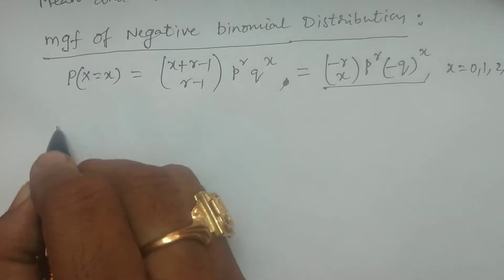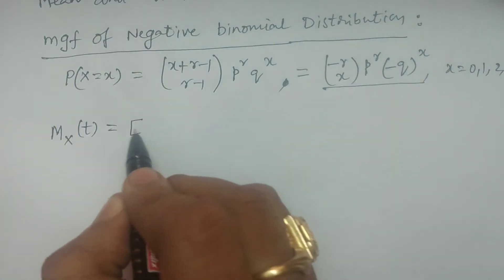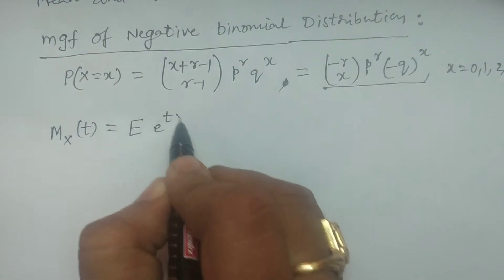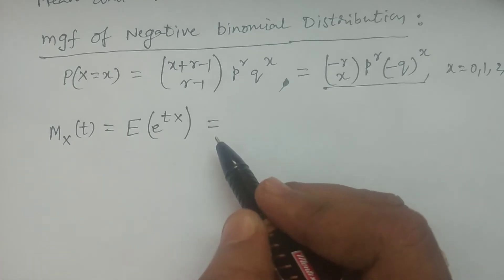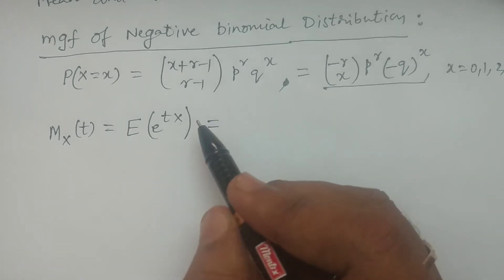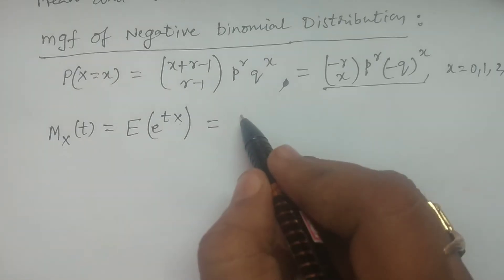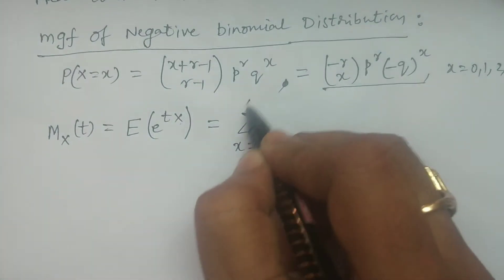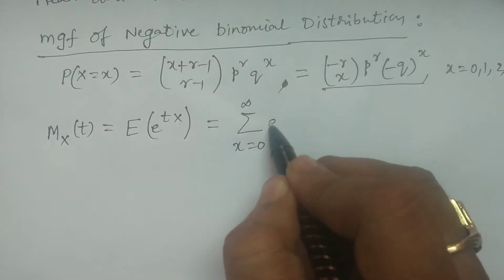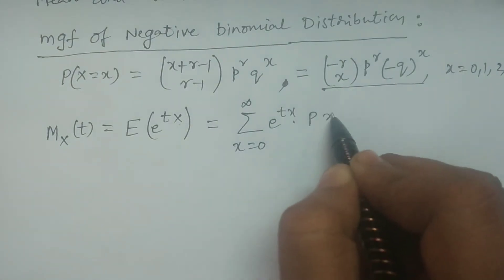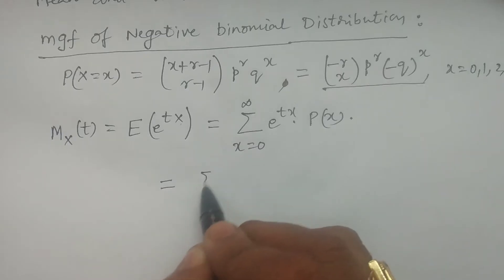Now, the moment generating function M_X(t) of the negative binomial distribution is defined as the expectation of e to the power tx. This is the definition of the MGF. Since negative binomial distribution takes discrete values, we use the summation where x goes from 0 to infinity, giving us the sum of e to the power tx multiplied by P(x).